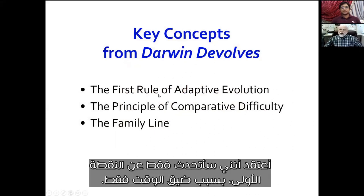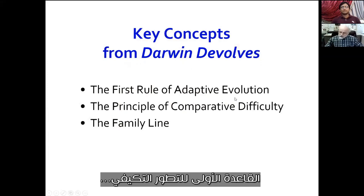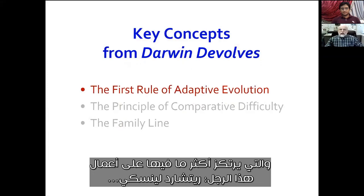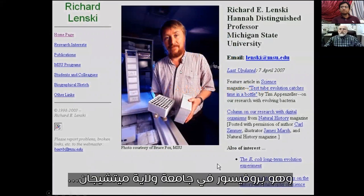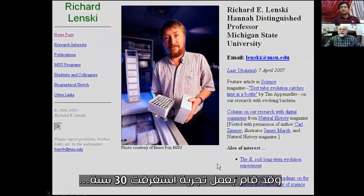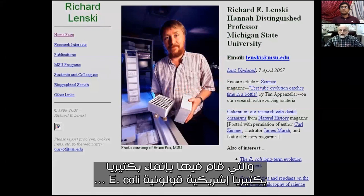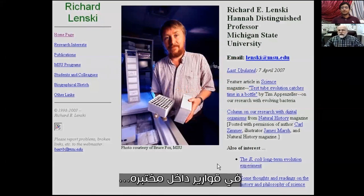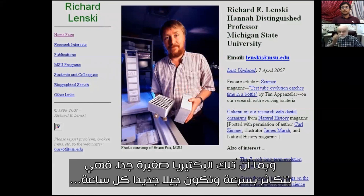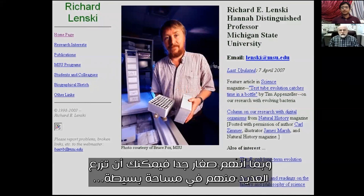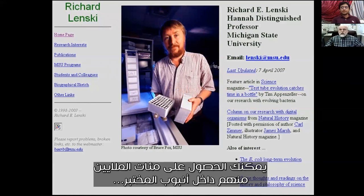I'll just talk about the first one because of time. The First Rule of Adaptive Evolution is largely based on the work of Richard Lenski, a professor at Michigan State. He has run an experiment for 30 years growing the bacterium E. coli in flasks in his laboratory. Since E. coli bacteria are so small they reproduce quickly — about one hour per generation — and you can grow hundreds of millions of them in a test tube.